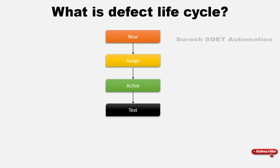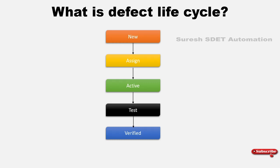Once the developer provides a fix, it will move to the testing phase where the testing team starts verifying each and every module associated with it — like sanity testing. If the defect is fixed in a certain area, we perform sanity testing to verify it is working correctly and that the fix is not impacting any other module. Once done, we move the defect to 'Closed' status. This is the normal flow.